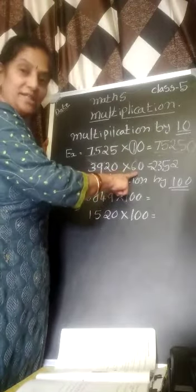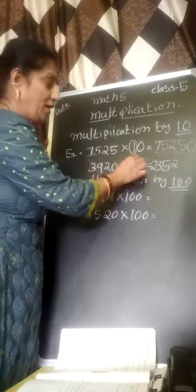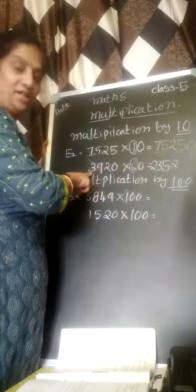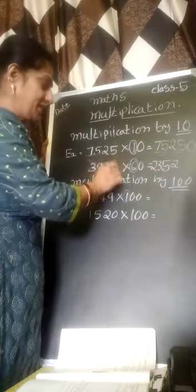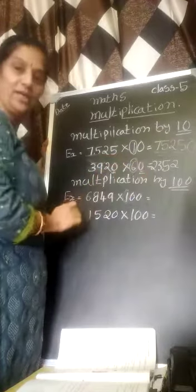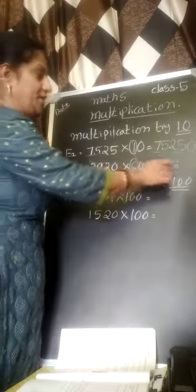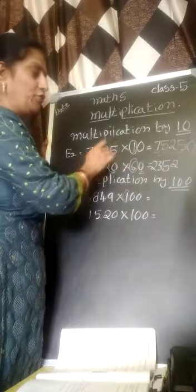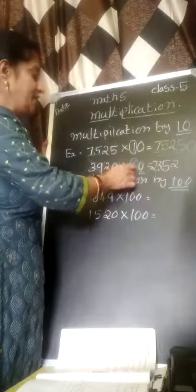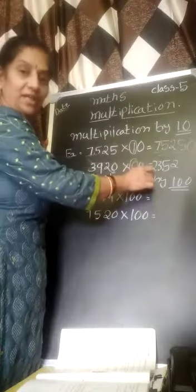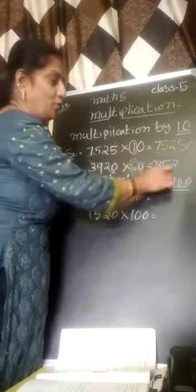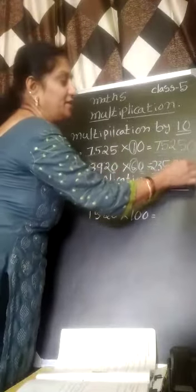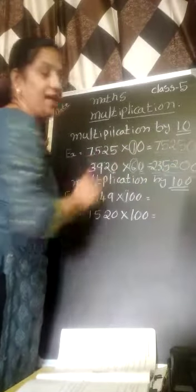3920 into 60. You have to concentrate on this number 6. Multiply with the 6. You are leaving this 0 and this 0. So 6 times 2 is 12, 1 carry. 6 times 9 is 54, 54 plus 1 is 55. 6 times 3 is 18 plus 5 is 23. So this is the answer you got. What about these two 0's? You have to put them right here. This is the perfect answer.